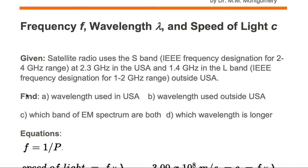We want to find the wavelength used in the USA associated with the 2.3 gigahertz frequency, and the wavelength used outside the USA associated with the 1.4 gigahertz frequency. Then in part C, we want to find which band of the EM spectrum both are in, and in part D, which wavelength is longer.